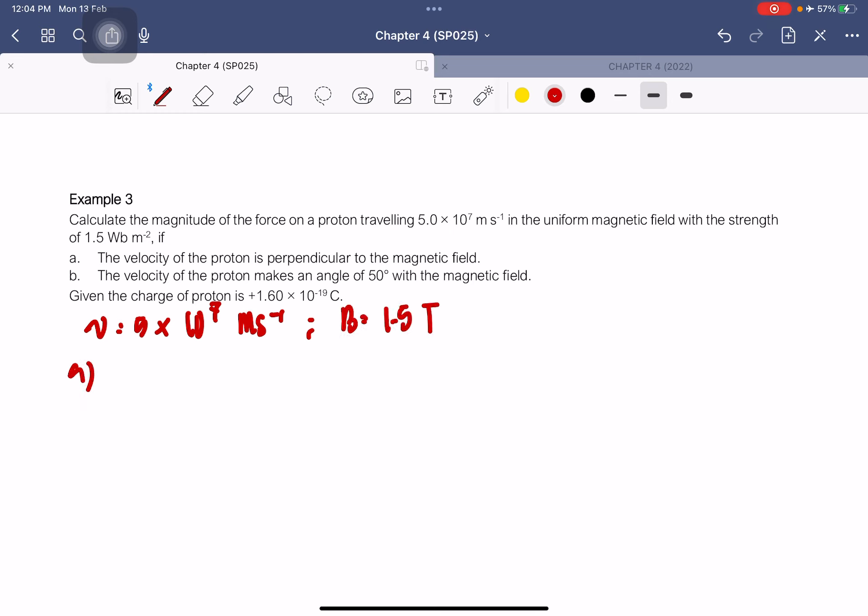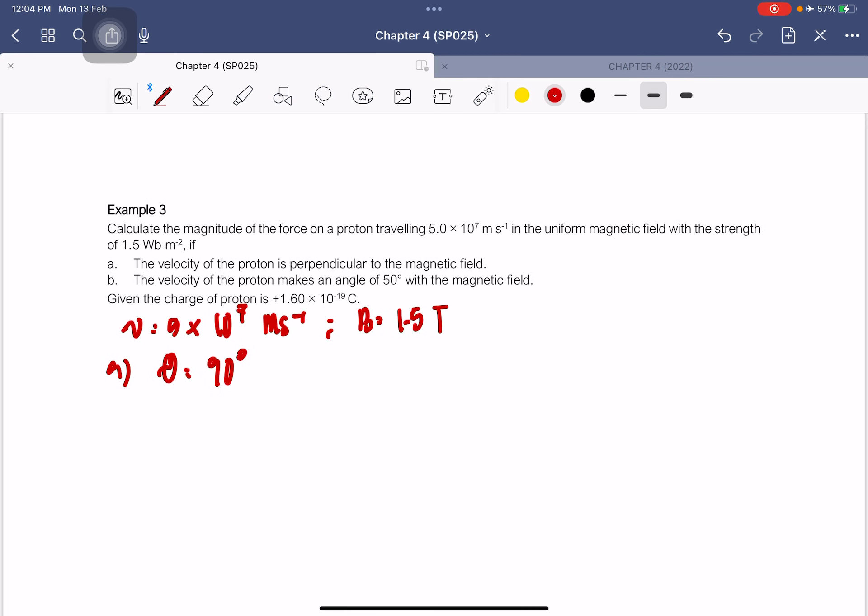We need to find the magnetic force if the velocity of the proton is perpendicular to the magnetic field. So the angle is 90 degrees. What's the formula? F = QVB sin θ.